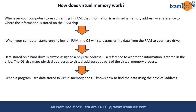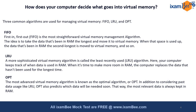Once this mapping is in place, whenever a program uses data stored in virtual memory, the operating system knows how to find that data using its physical address. The user feels the data is in main memory, but it is actually stored on the hard drive. The operating system always keeps track of all instructions and data stored on the computer, whether in RAM or in virtual memory on the hard disk.